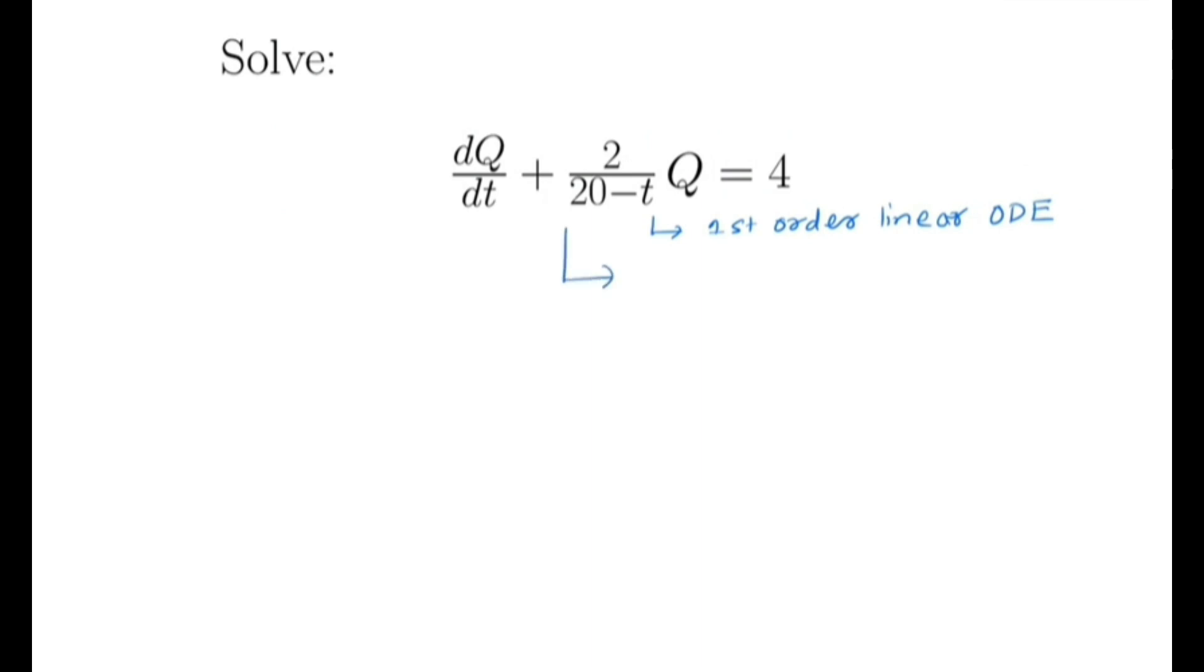Now first order linear differential equation has the following form: dQ/dt + p(t)Q = n(t). So by comparing, we get p(t) is nothing but 2/(20-t).